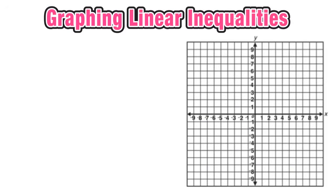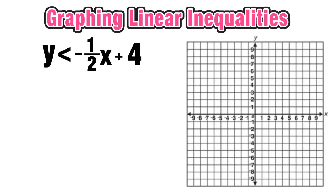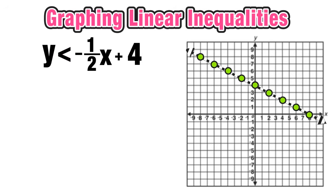Now for a second example: y is less than -½x plus 4. We graph this line, and since it's a less than symbol (not less than or equal to), we use a dashed line instead of a solid line. Less than also means we shade the region below the line.